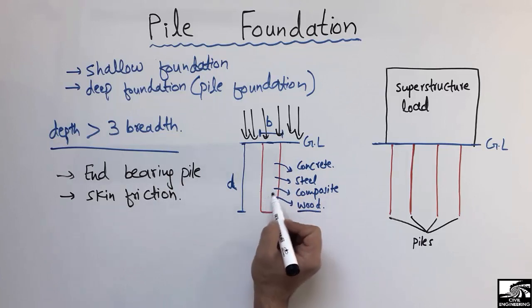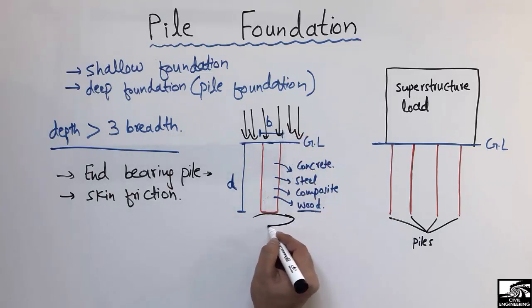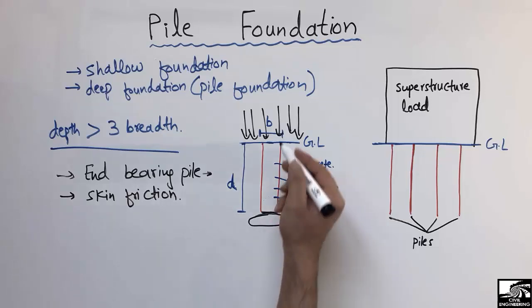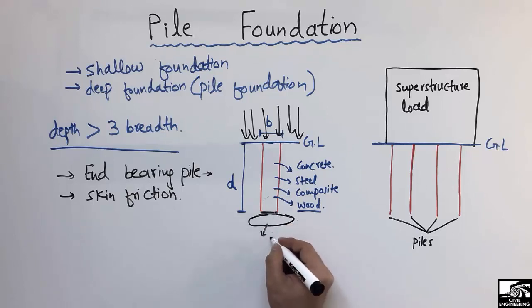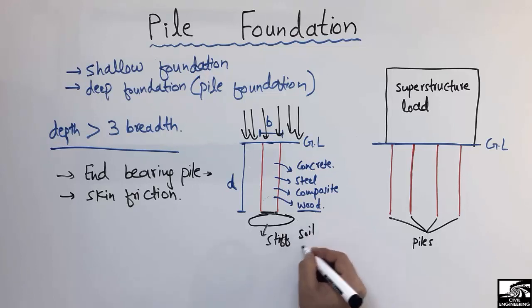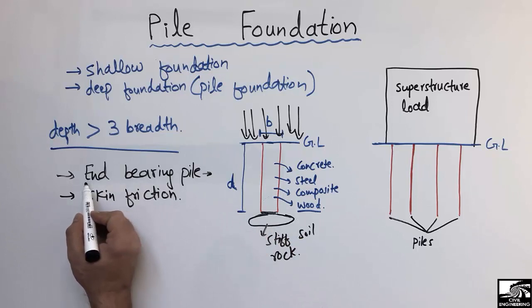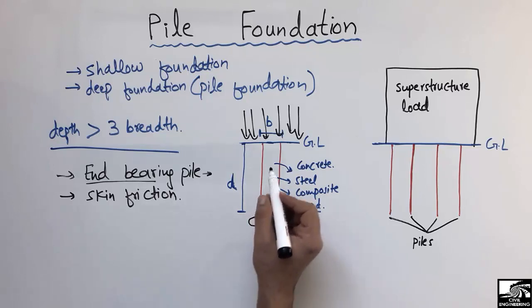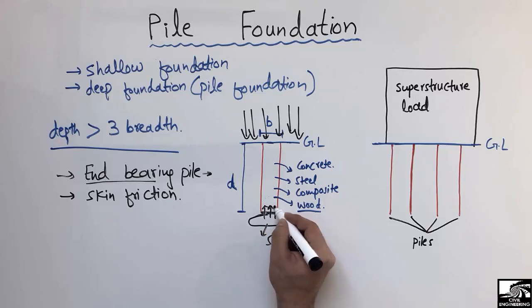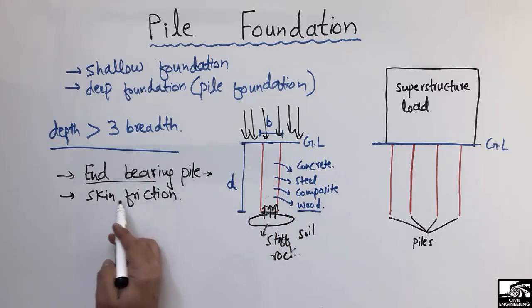If the pile is an end-bearing pile, the whole load from the superstructure is carried down to the tip of the pile. The whole load is taken at the tip, which rests on a strong, stiff soil or a rock. The stiff soil at the tip resists the load in the upward direction. This type of pile foundation is called the end-bearing pile because the entire load comes at the end of the pile and the tip is responsible for taking that load.